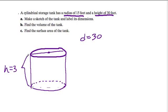Now I want to label the dimensions. So I have the height and I have the diameter. I might also label the radius down here just to help me out. The radius r equals 15. Done.